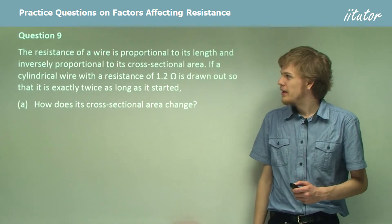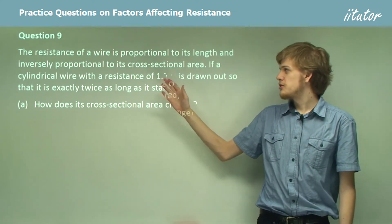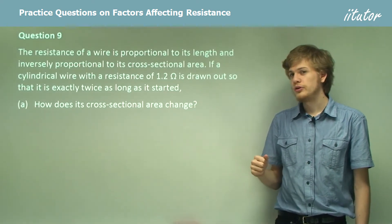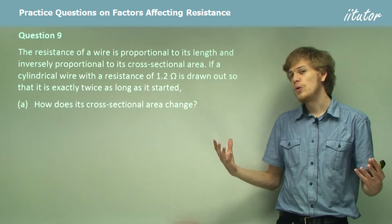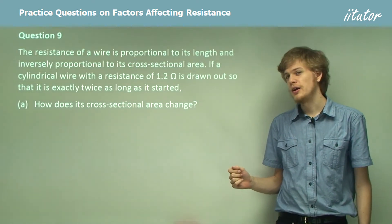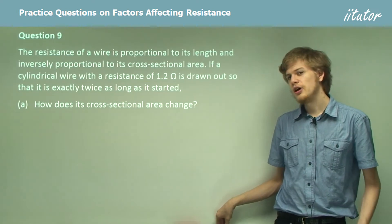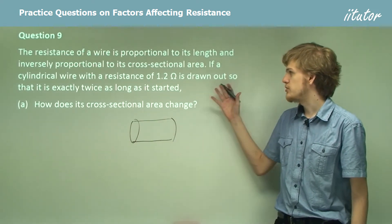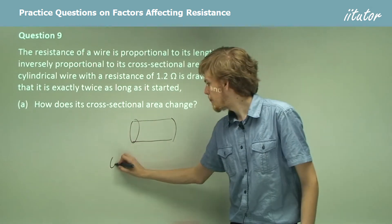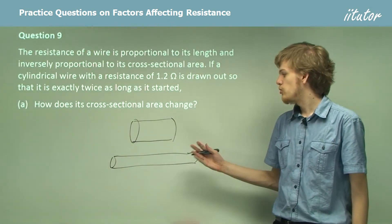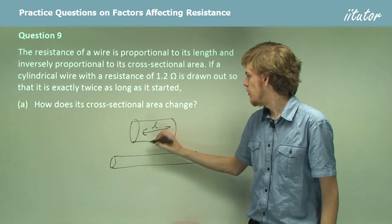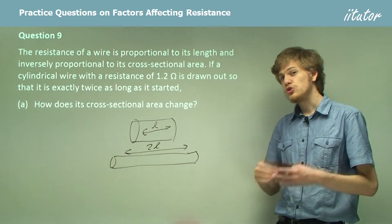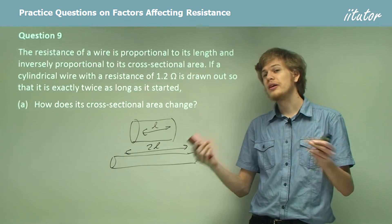Question 9. The resistance of a wire is proportional to its length and inversely proportional to its cross-sectional area. A cylindrical wire with a resistance of 1.2 ohms is drawn out so it is exactly twice as long as when it started. Let's draw a diagram: the wire is drawn out to the same volume but twice the length — if the original length is L, the new length is 2L.